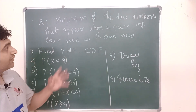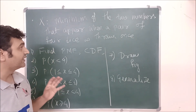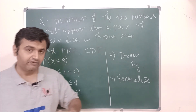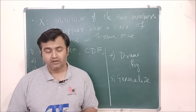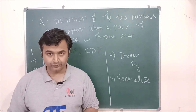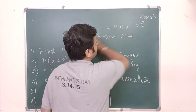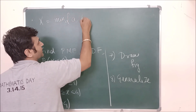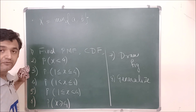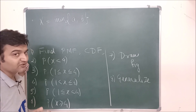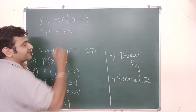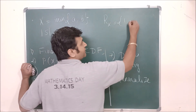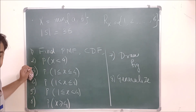The random variable X is defined as the minimum of two numbers that appear when a pair of fair dice is thrown once. So you have two fair dice thrown once, and you count the minimum of the two numbers. For example, if the outcome is (1,4), the minimum is 1; if the outcome is (5,6), the minimum is 5. The sample space is all pairs (a,b) where a and b each range from 1 to 6, giving 36 total outcomes. The range set of X is {1, 2, 3, 4, 5, 6}.